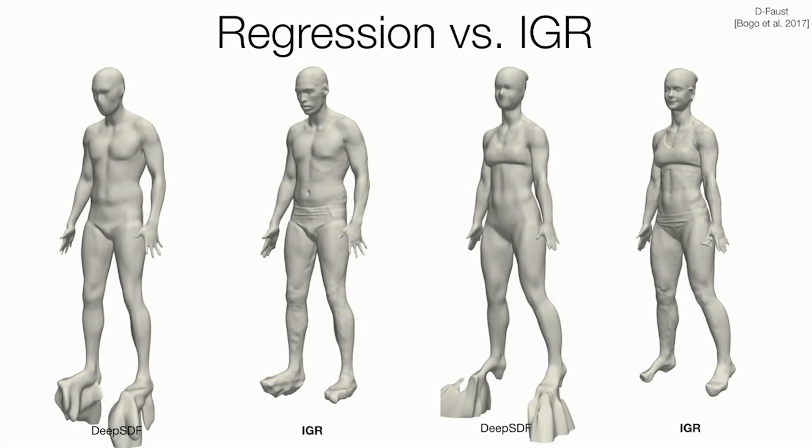An interesting question is how IGR compares to regression when both are fed with equivalent data and trained with same network architecture. In this experiment, we sampled an input scan from the D-Faust dataset with 250k points and extracted the corresponding normals. For regression, we created two samples, one inside and one outside of the surface by a standard method of translating sample points in the positive and negative normal directions. Alternatively, we provided IGR loss with same samples as normal.